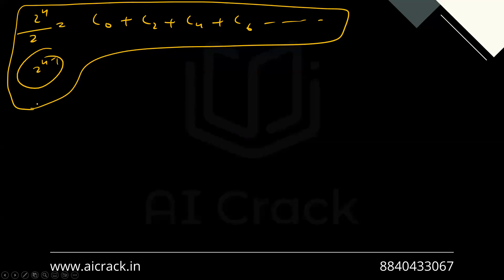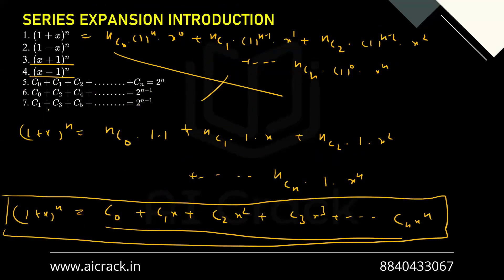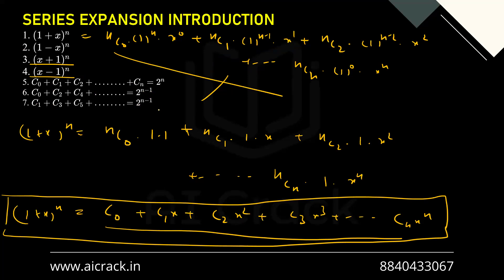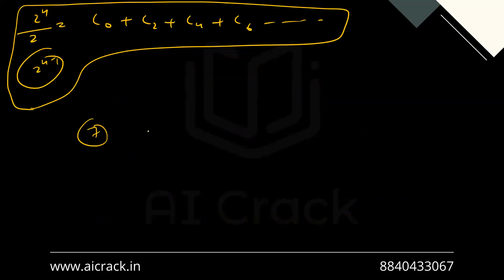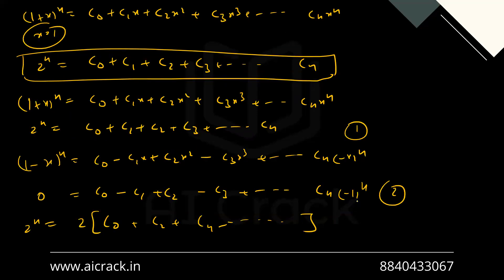The seventh formula is C1 + C3 + C5 + ... = 2^(n-1), summing terms with odd subscripts. I'll keep this as homework — it's very simple. You just subtract equation 1 and equation 2, the even subscripts cancel and the odd subscripts double, and you get the same result.